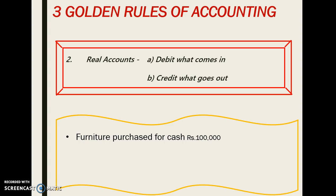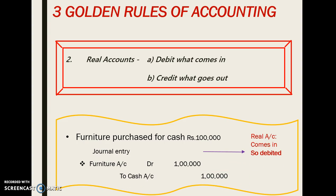Let's see one example: furniture purchased for cash. The journal entry is furniture account debit to cash. Here, furniture is a real account — furniture comes into our business so we debit the furniture account. Cash account is also a real account, and since we are paying cash it goes out, so cash account is being credited.